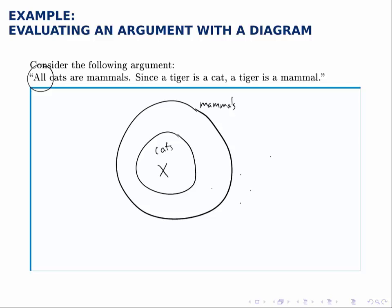So that universal quantifier gives us this diagram, and then from that we can tell that this is a valid argument by noting that the conclusion is clear from the premises.